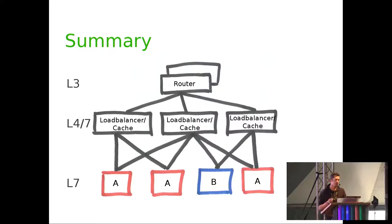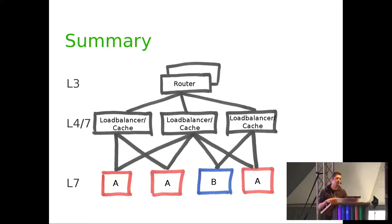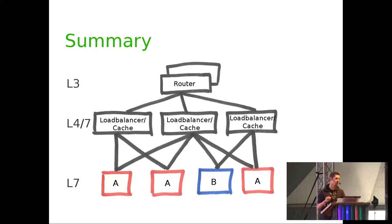In summary, there are different points where systems can be attacked: at the router or in the uplink by filling bandwidth, exploiting session limits in a load balancer or cache, or causing high back-end server load.